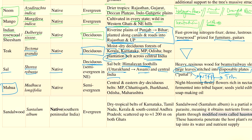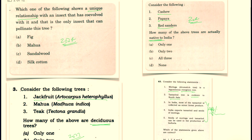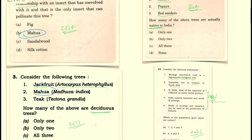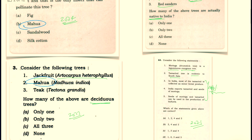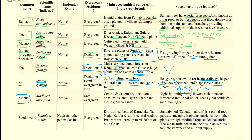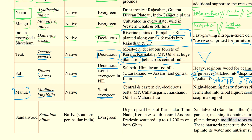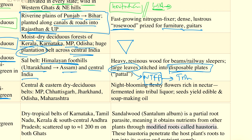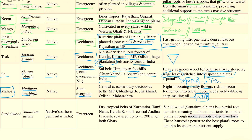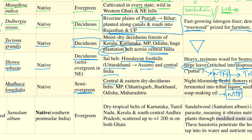Mahua is very important because it was asked twice. Its technical name is Madhuca indica, and there is one more species called Madhuca longifolia. It is mostly a semi-evergreen tree. Its uses include — a liquor is made from its flowers, and it is a very important non-timber forest produce. Its distribution is in the central and eastern dry deciduous belts of Madhya Pradesh, Chhattisgarh, Jharkhand, Odisha, and Maharashtra.